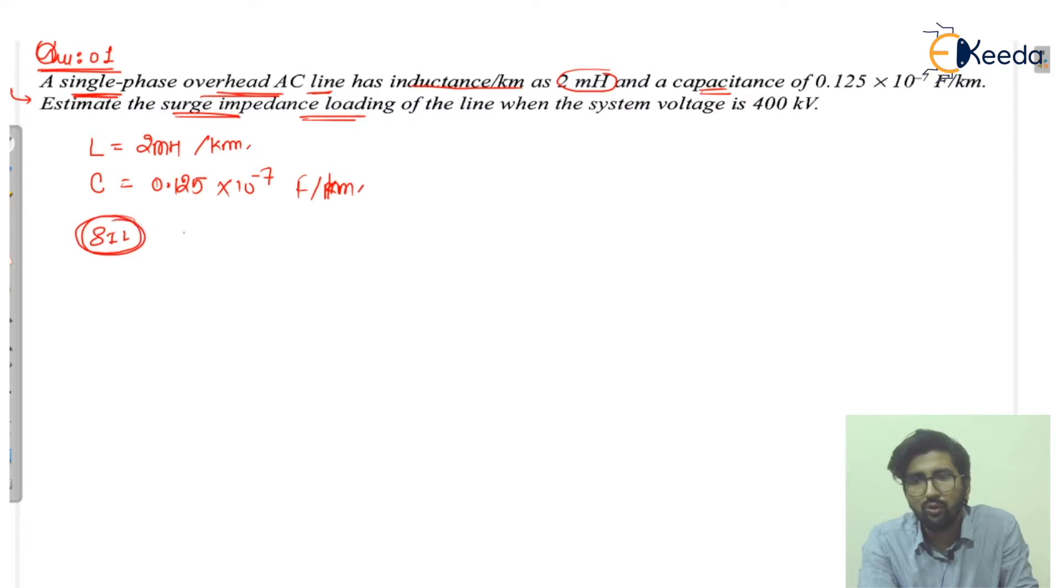What I have to find is surge impedance loading. What is the surge impedance loading and what is the formula? This is the power transfer capability, and it is actually V squared upon Zs, and this Zs is actually your surge impedance.